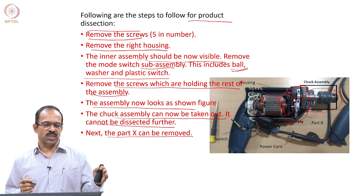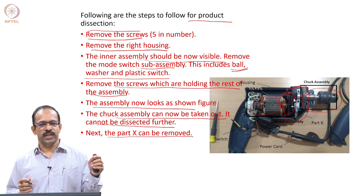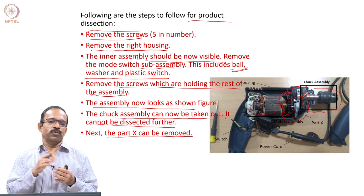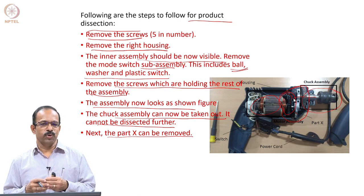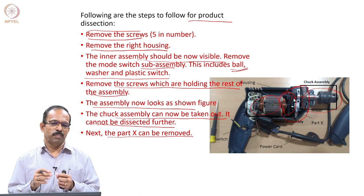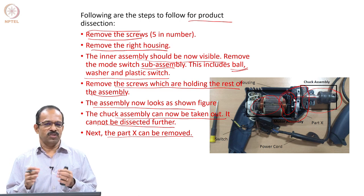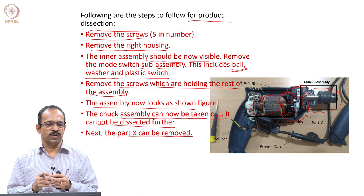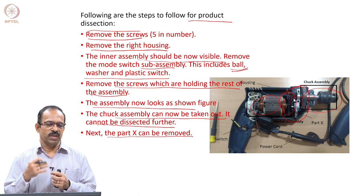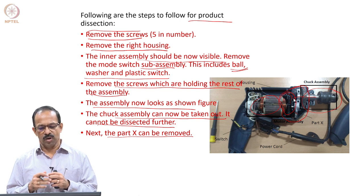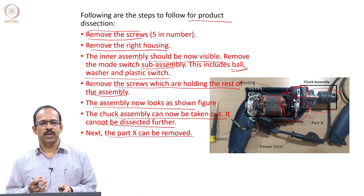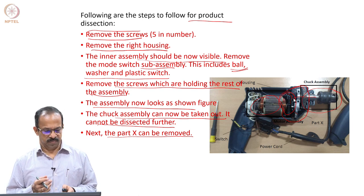Look at those parts and try to identify their main function. Your TA will help you identify the main function of these different parts and the assembly structure as well. After this, prepare an assembly chart for the product.